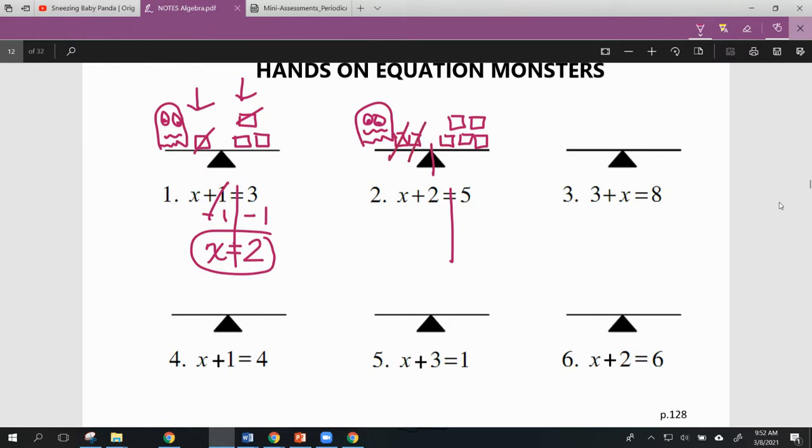But if we get rid of those two boxes, what just happened to our balance? It's going to be really wonky. One side is going to be heavier than the other. So if we get rid of two boxes on the left side, we're going to have to get rid of two boxes on the right side as well. And now all we're left with on our scale is our ghost equaling three boxes.